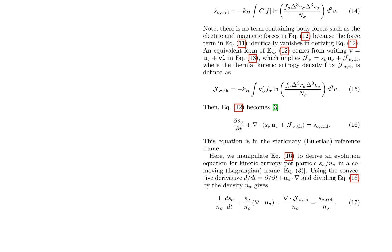This yields the final equation: (1/n-sigma) ds-sigma/dt + (s-sigma/n-sigma) nabla·u-sigma + nabla·j-sigma-Th/n-sigma = s-sigma-call/n-sigma. This work builds upon previous research in statistical mechanics, collisionless plasma flows, and turbulence, as well as the thermodynamic origins of kappa distributions. By deriving the kinetic entropy evolution equation, this study contributes to a deeper understanding of energy conversion in plasmas.